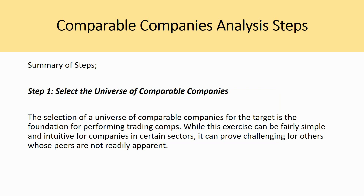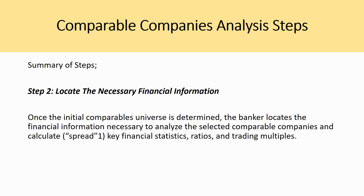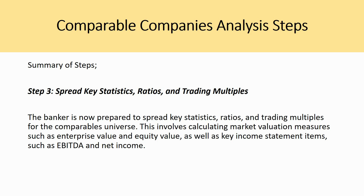A quick summary of those steps: In step one, the selection of a universe of comparable companies is the foundation for performing trading comps. While this can be fairly simple for companies in certain sectors, it can prove challenging for others whose peers are not readily apparent. In step two, once the initial comparable universe is determined, the banker locates the financial information necessary to analyze the selected comparable companies and calculate the key financial statistics, ratios, and trading multiples.